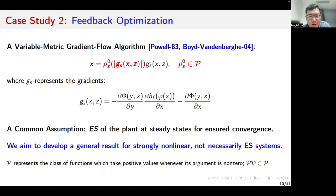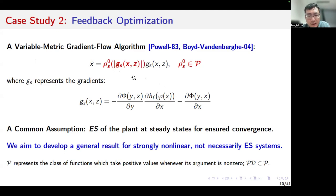This is also motivated by the so-called variable metric gradient flow algorithm, which is given by this equation. Normally, people update the optimization variable by directly using the gradient information of the objective function. GS basically represents the gradient of the objective function. But in the variable metric gradient flow algorithm, here is a non-linear term which depends on the magnitude of the gradient value for possibly improved performance of the optimization system. If the rho(s0) term is a constant, then the closed-loop system can be written in the standard singular perturbation form. But now, rho(s0) is not a constant — it is a non-linear function.